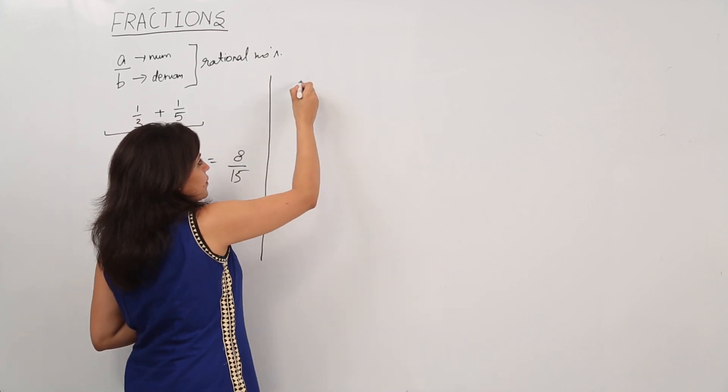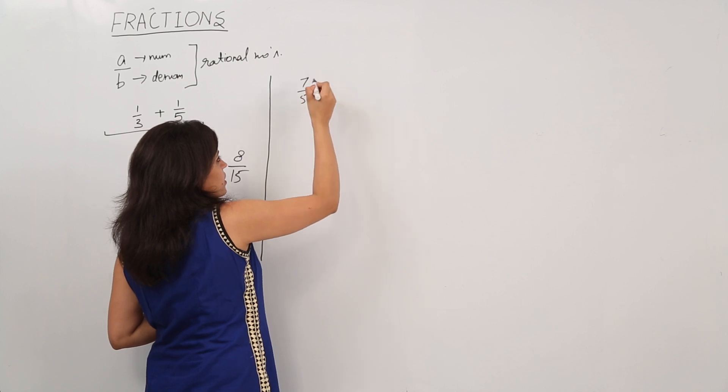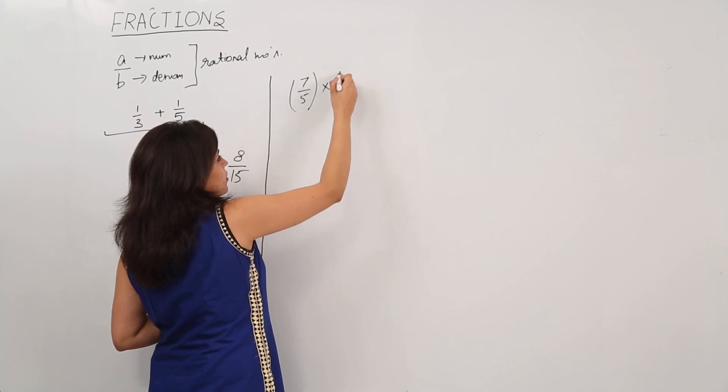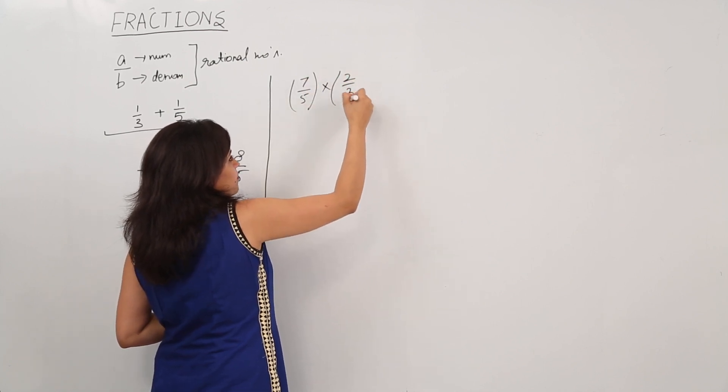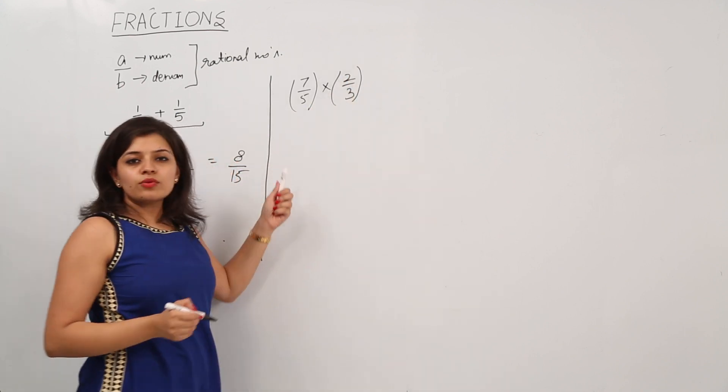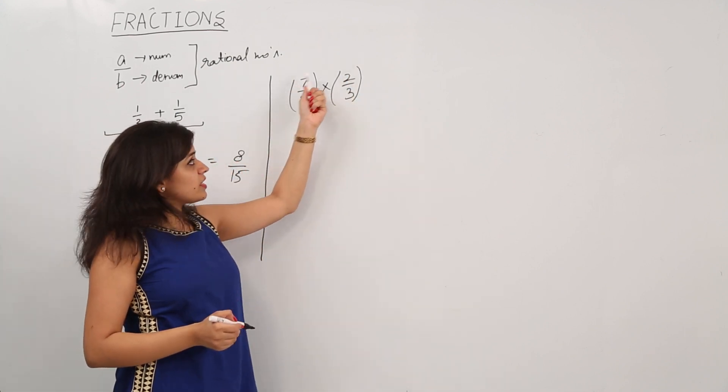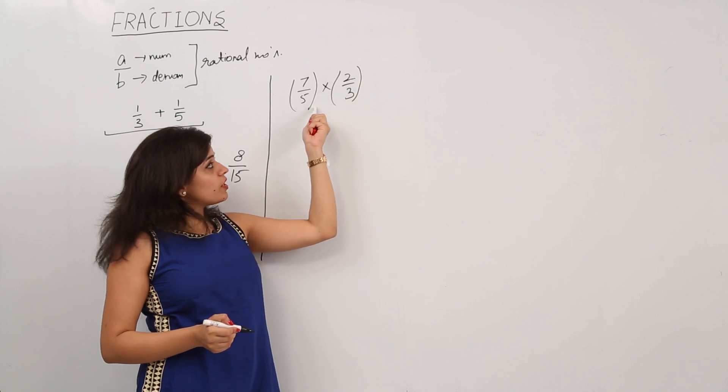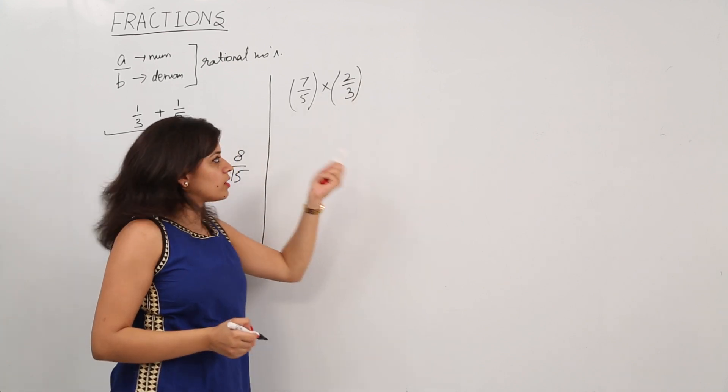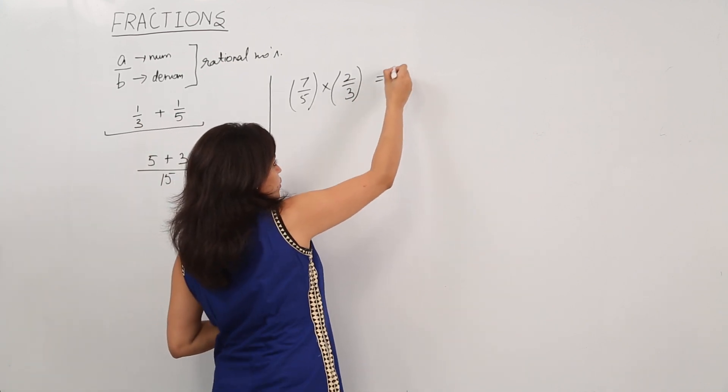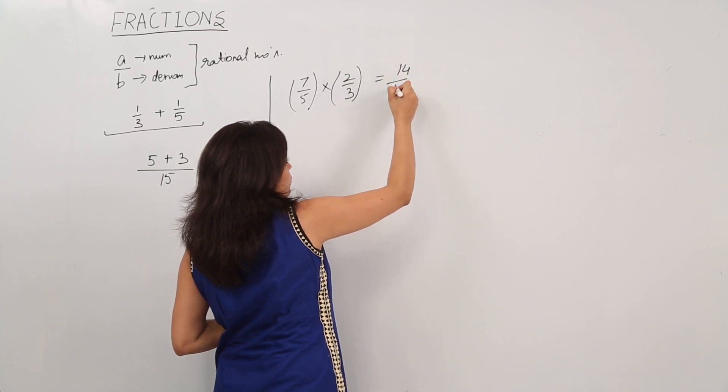Let's say we have a number 7 by 5 and another number 2 by 3. To multiply 2 rational numbers, numerator is multiplied by the second numerator and denominator is multiplied by the second denominator. That is, 7 into 2 will be 14 and 5 into 3 will be 15.